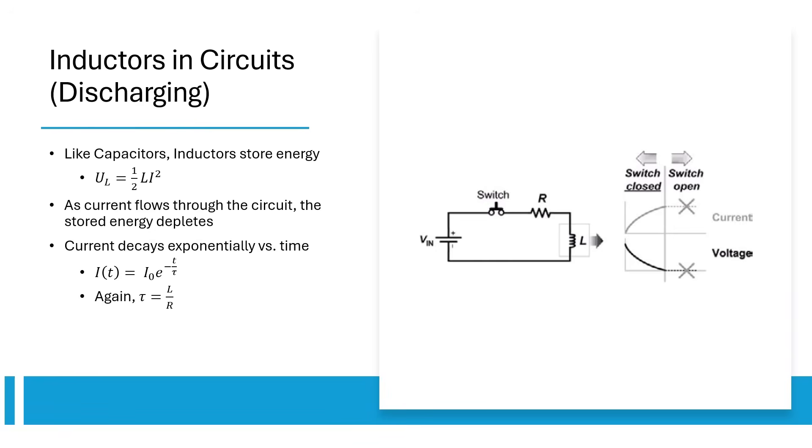It turns out that the current decays exponentially with the new time constant tau for what we call RL circuits equals to L over R.